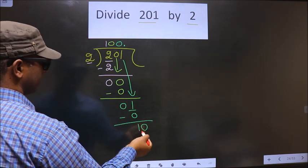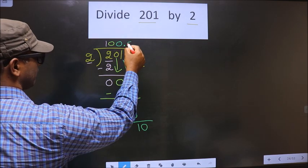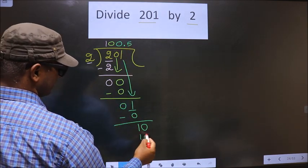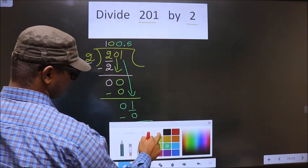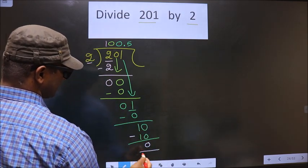Now, here we have 10. When do we get 10 in 2 table? 2, 5 is 10. So, now, you subtract. You get 0.